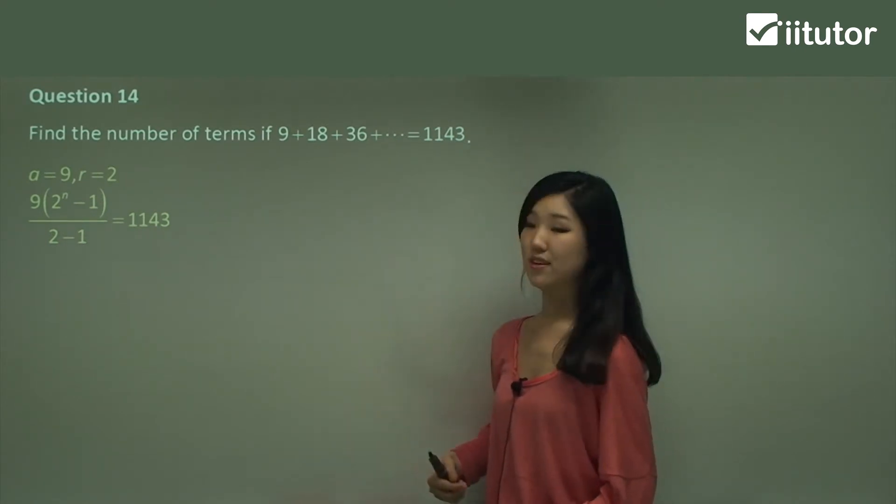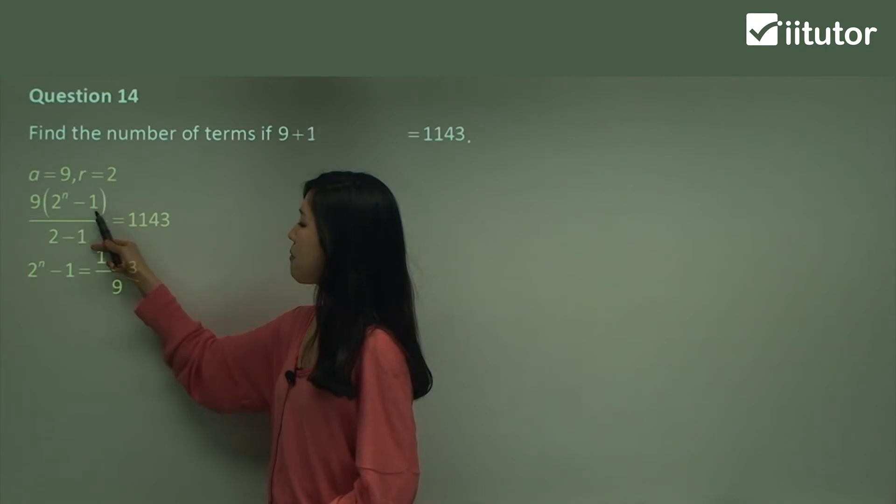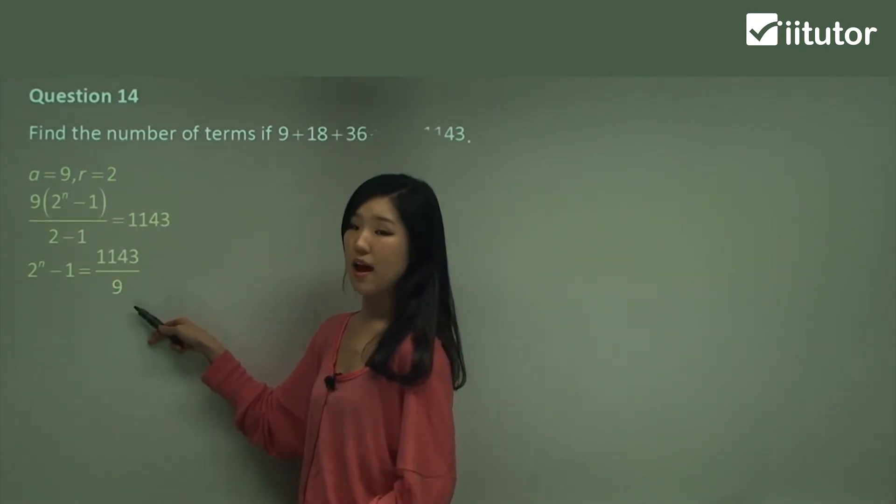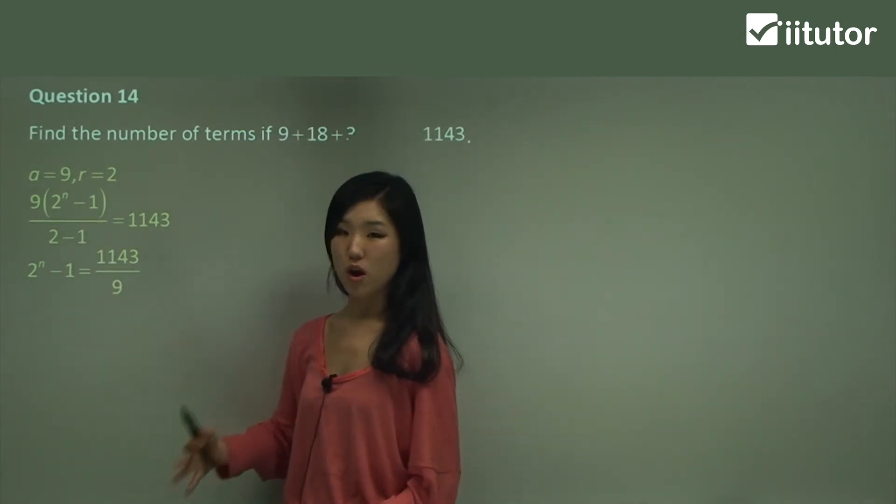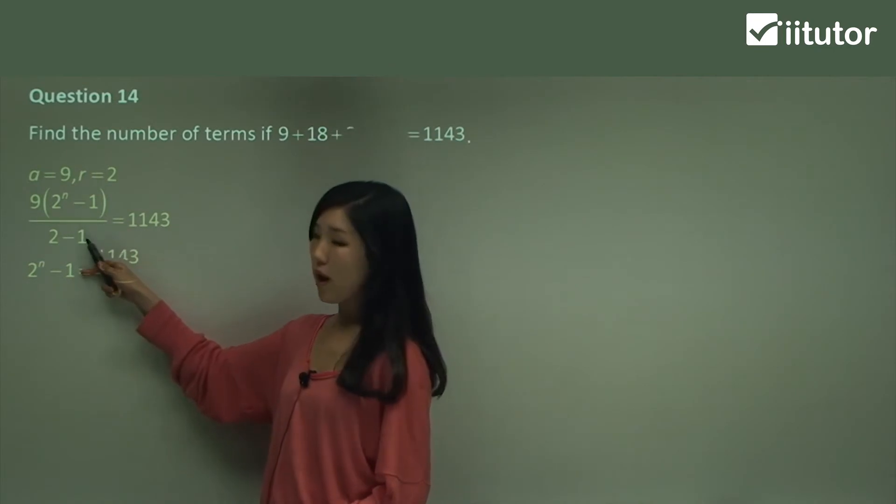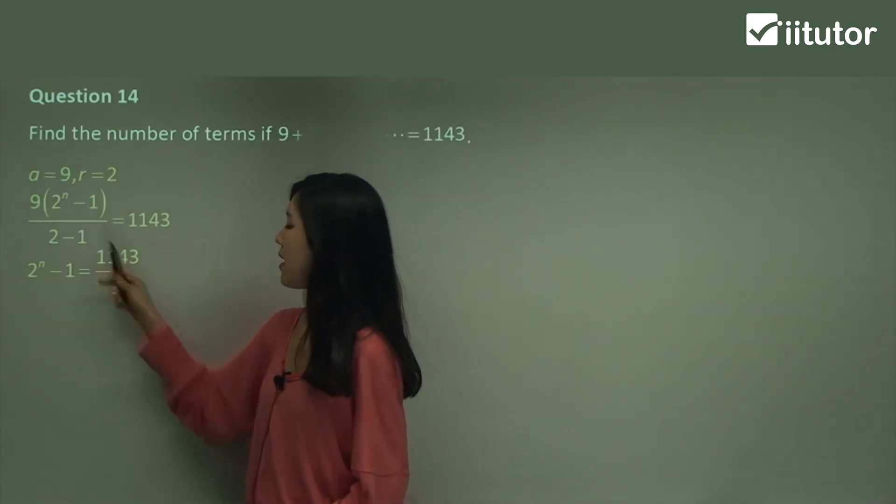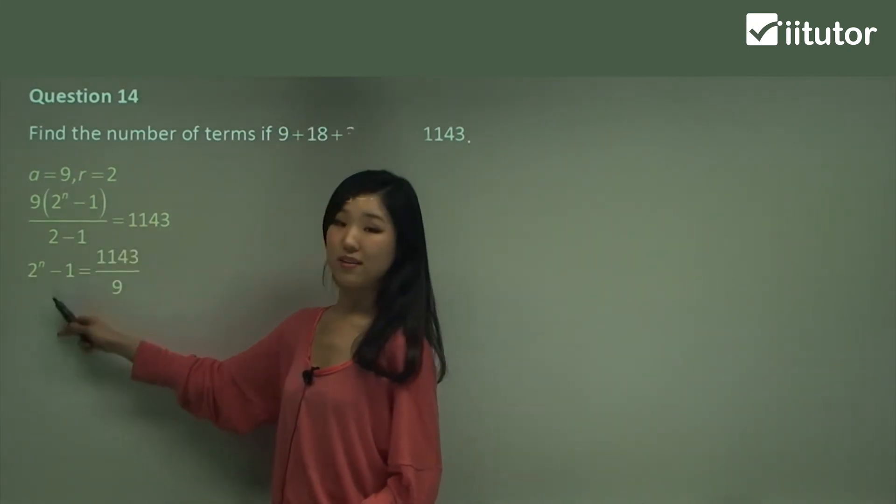Now let's solve it. Solve for n. So I'm just going to go like this. So 2^n minus 1 is basically 1143 divided by 9 because look, 2 minus 1 is simply 1, so we don't really need to worry about that. So 1143 times 1 is just 1143 and then divide it by 9. So on this side we're left with 2^n minus 1.